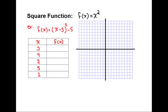The next function is the square function, which has a term x to the second power. These are just elementary functions — once you learn more about these graphs, you'll see there are other conditions and parameters involved. We're going to study these in more detail throughout the semester. Right now we're doing it by plotting points. In our example, we have (x minus 3) to the second power minus 5.